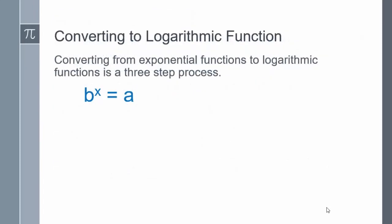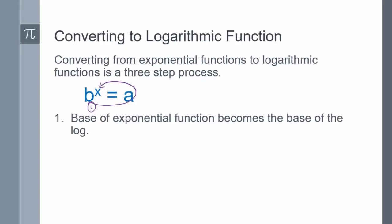To convert from an exponential function to a logarithmic function is a three-step process. Step one: the base of the exponential function becomes the base of the log. So the base of this exponential function is b — it becomes the base of my log.